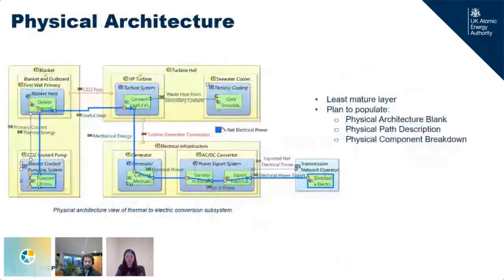The physical architecture has so far been the least mature layer in our model. This is partly because many technologies are still in selection and we are starting to refine the concept as design decisions are being made.